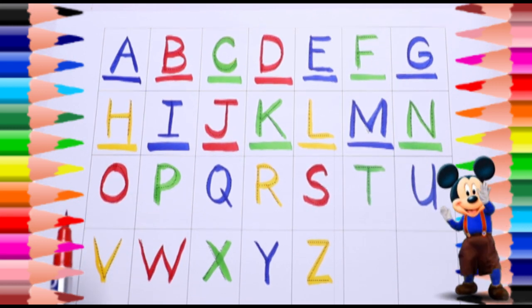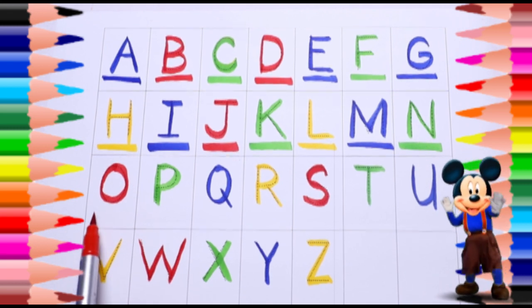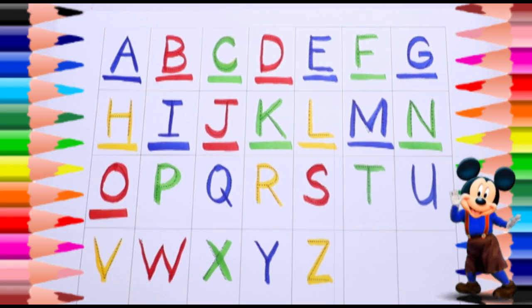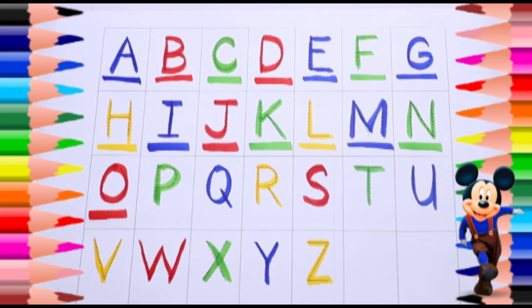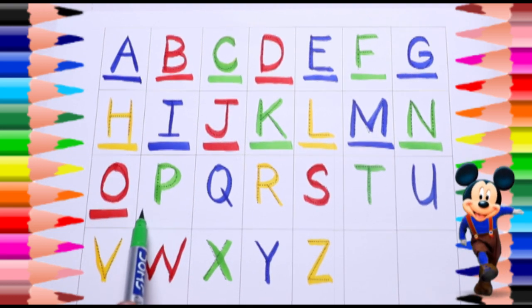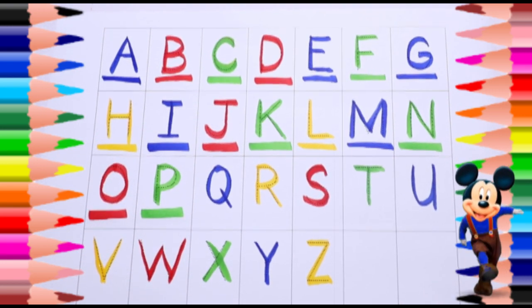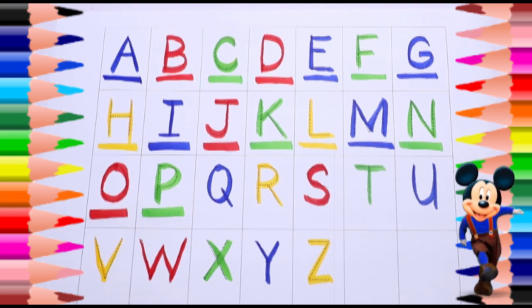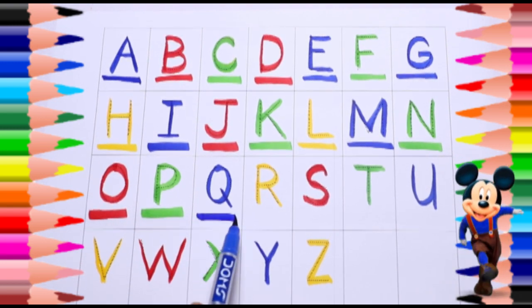Red color O, O for octopus. Green color P, P for parrot. Blue color Q, Q for queen.